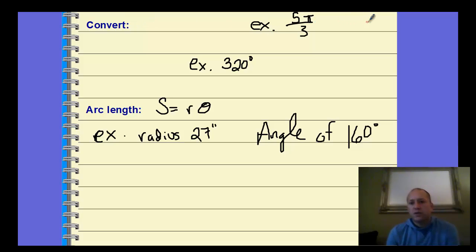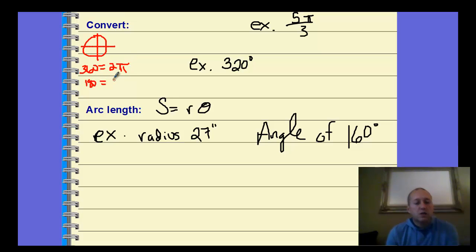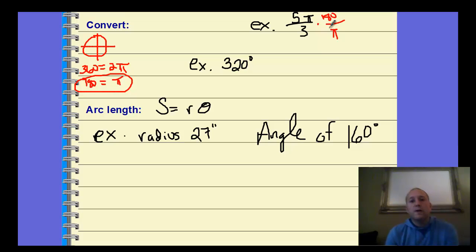To convert between degrees and radians: on a circle, 360° equals 2π, or equivalently 180° equals π. Given 5π/3 — since it has a π, we know it's in radians. To convert, multiply by 180/π so the π's cancel out. Then reduce: 3 goes into 180 sixty times, and 5 times 60 is 300. So 5π/3 equals 300°.